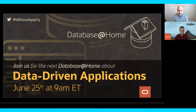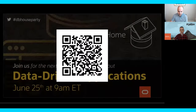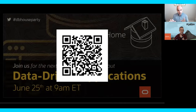Next week the database division is having a six-hour consecutive webinar called the Database House Party. If you look for hashtag DBHouseParty on Twitter, you'll find everything you need to know. This starts next week Thursday, June 25th at 9 a.m. Eastern, which is 1300 UTC. The focus is going to be on data-driven applications and application development. The entire series will weave together a common scenario from architecture to the development of a system to microservices, and there will even be a little bit of APEX at the end.